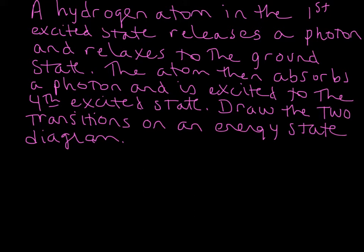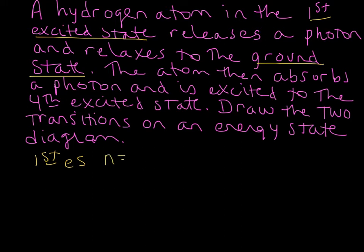Starting with what these terms mean in terms of what n equals: the first excited state is actually n equals 2, because we know the ground state is n equals 1. So the first excited state above the ground state is n equals 2.